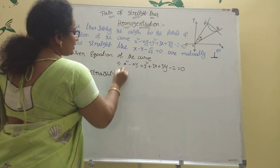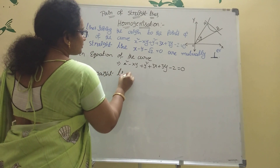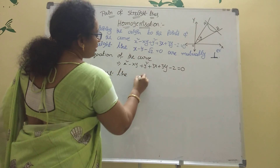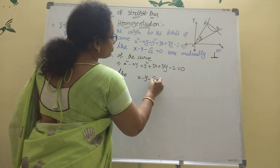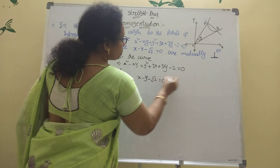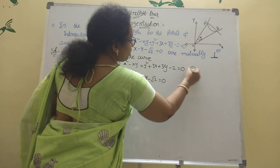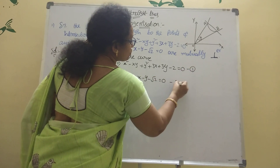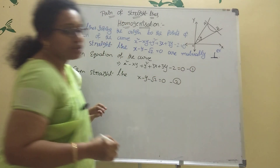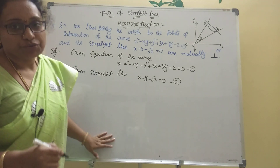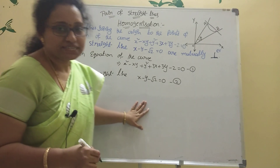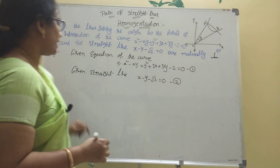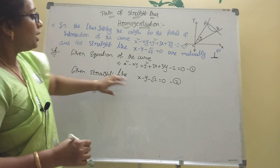The given straight line is x minus y minus root 2 equal to 0. This is equation 1 and this is equation 2. That is x minus y minus root 2 equal to 0.